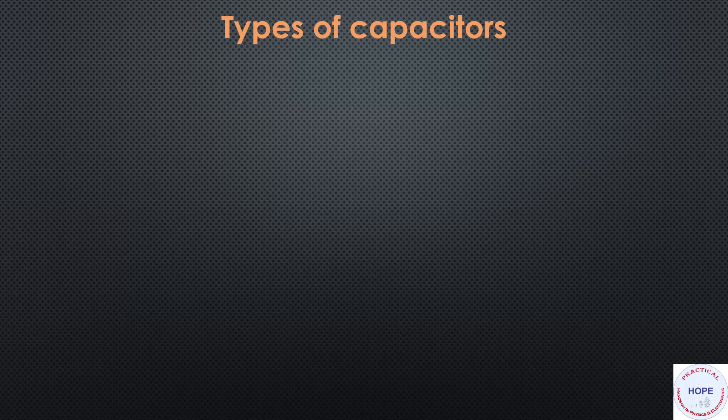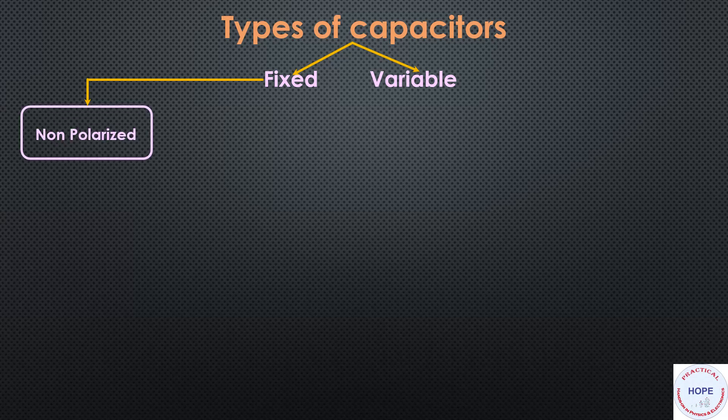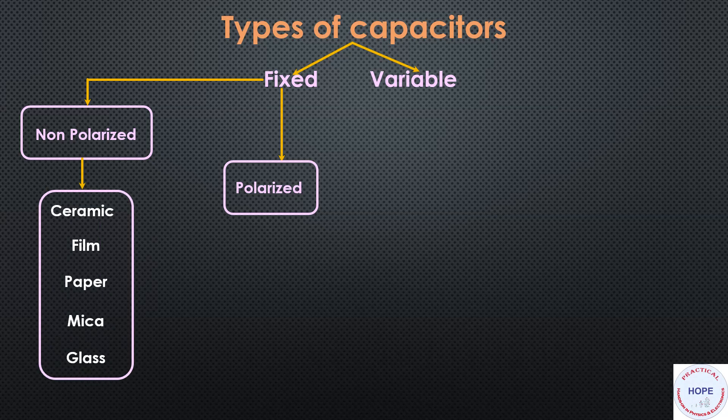There are two types of capacitors: fixed and variable. Fixed capacitors can be of non-polarized type or polarized type. Non-polarized capacitors can be of various types like ceramic based, film based, paper based, mica capacitors, or glass based capacitors.